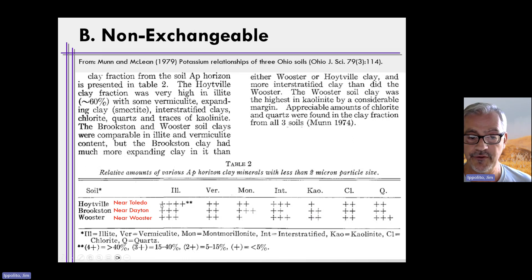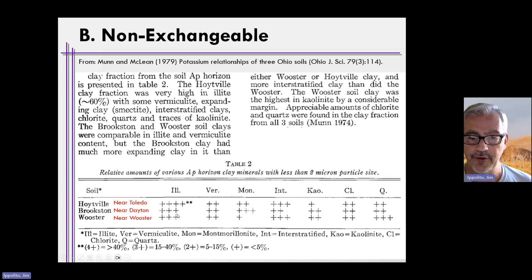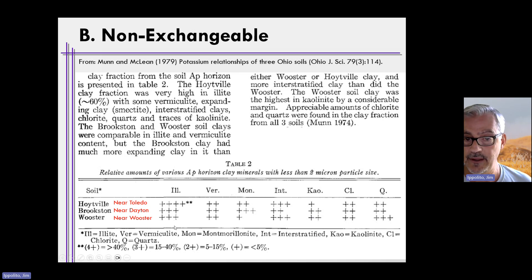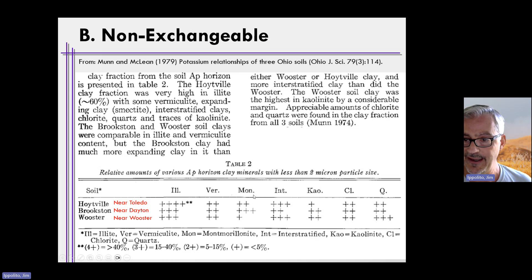Four pluses means greater than 40% of the clays are illites; three pluses means 15–40% illite. This tells us that Ohio soils tend to have quite a bit of two-to-one-type clays — illites, vermiculites, and montmorillonites — and also some kaolinites.